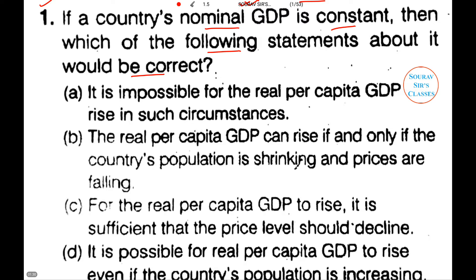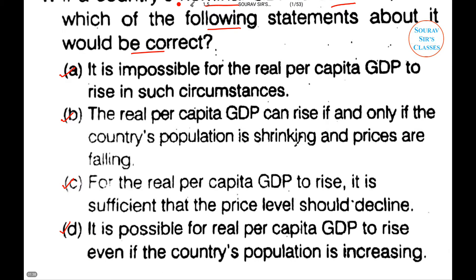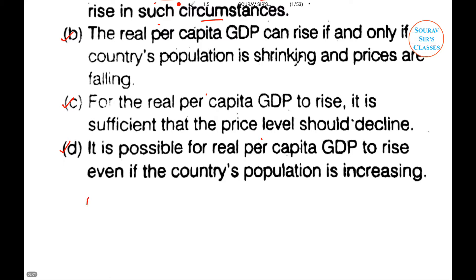We have been provided with four options and we have to choose the correct one. Option A says it is impossible for real per capita GDP to rise in such circumstances. All the options are talking about real per capita GDP, so let us do some analysis and then come back to the options.